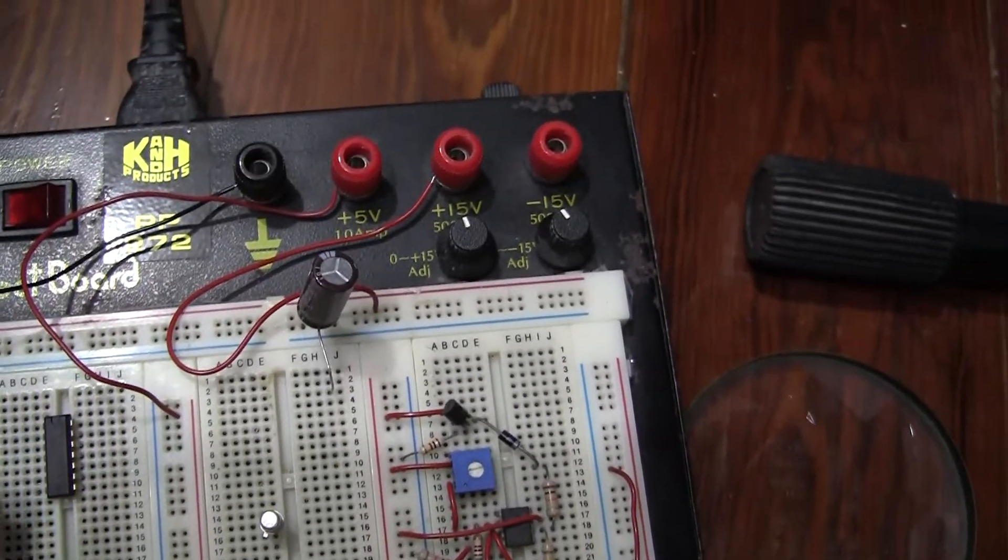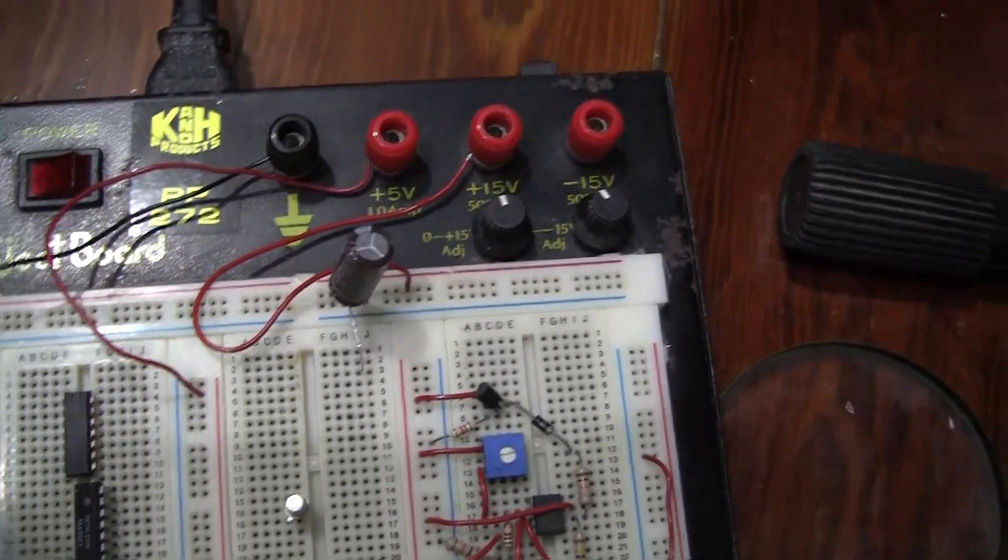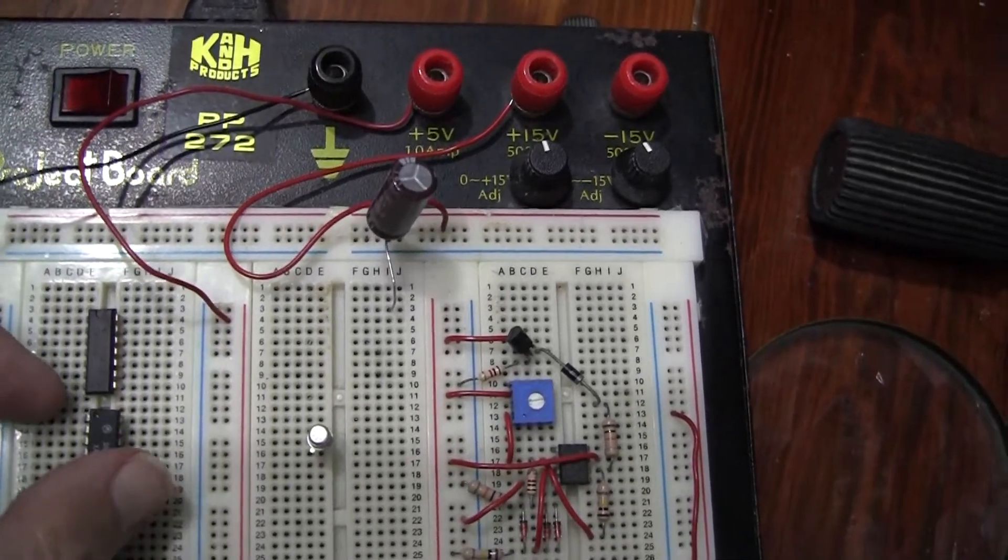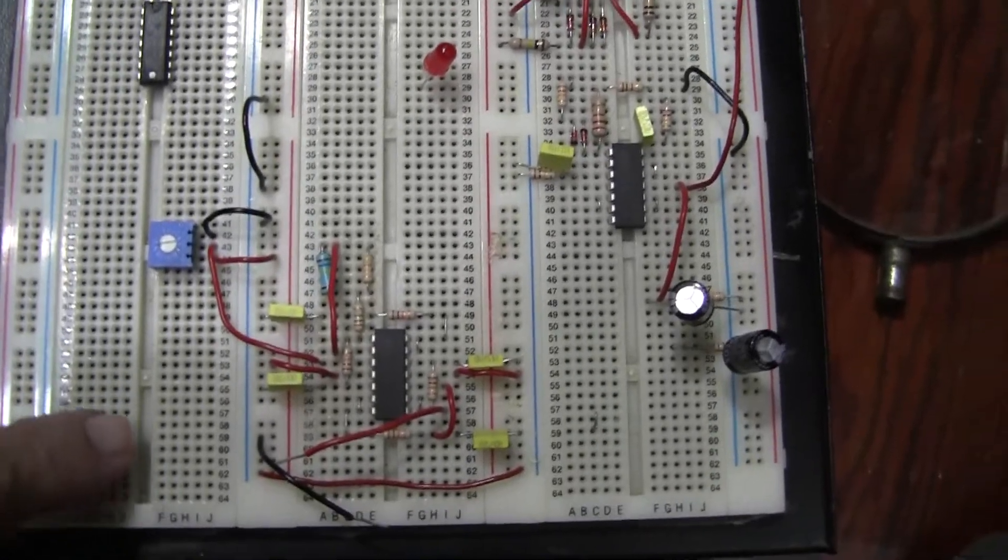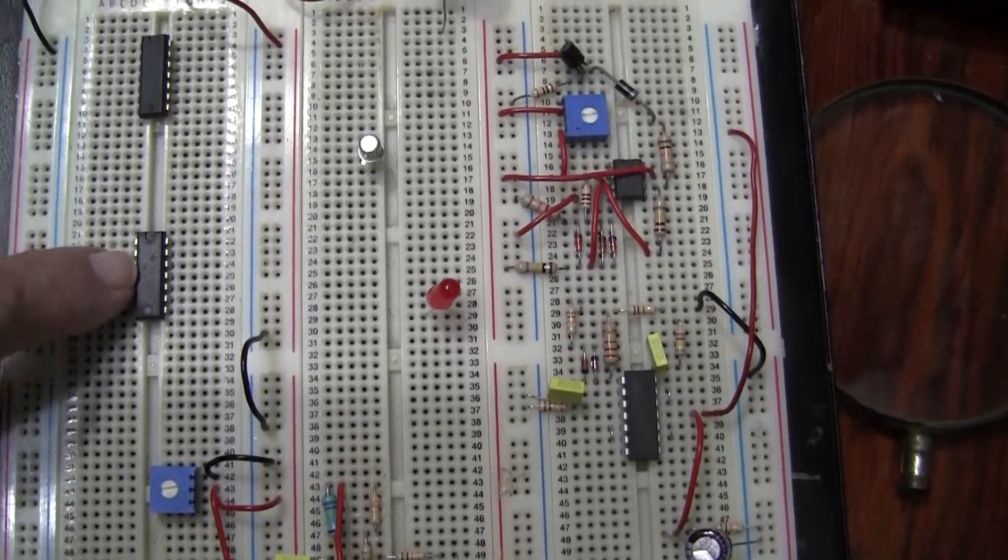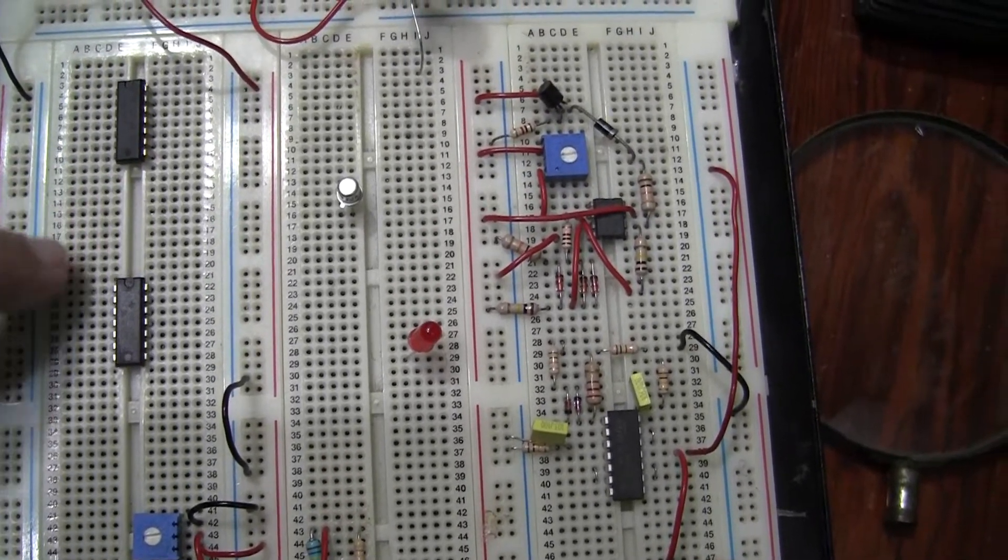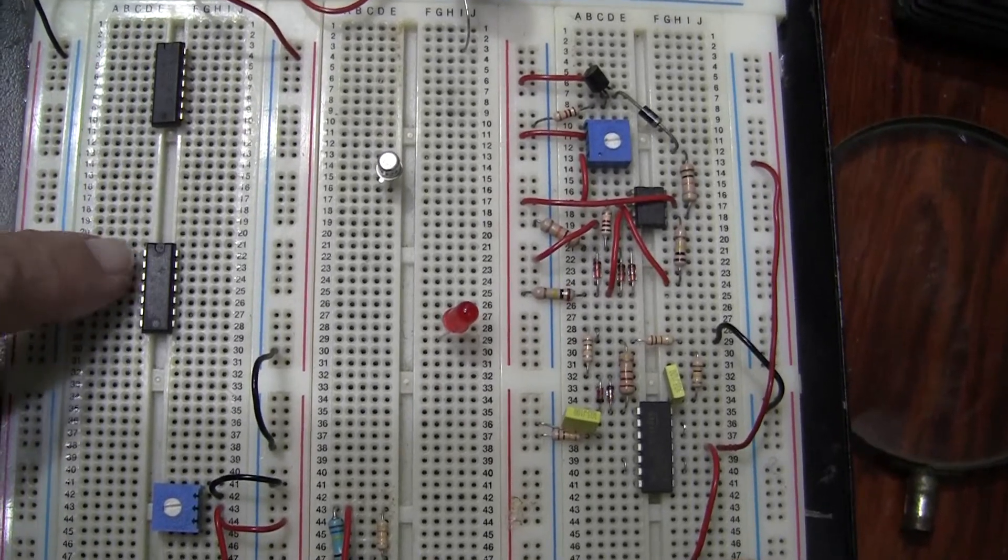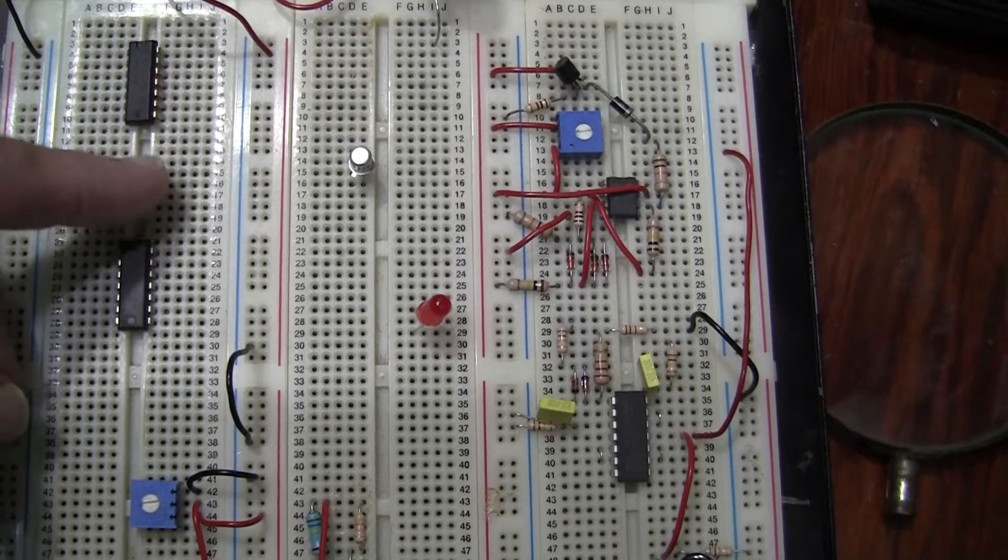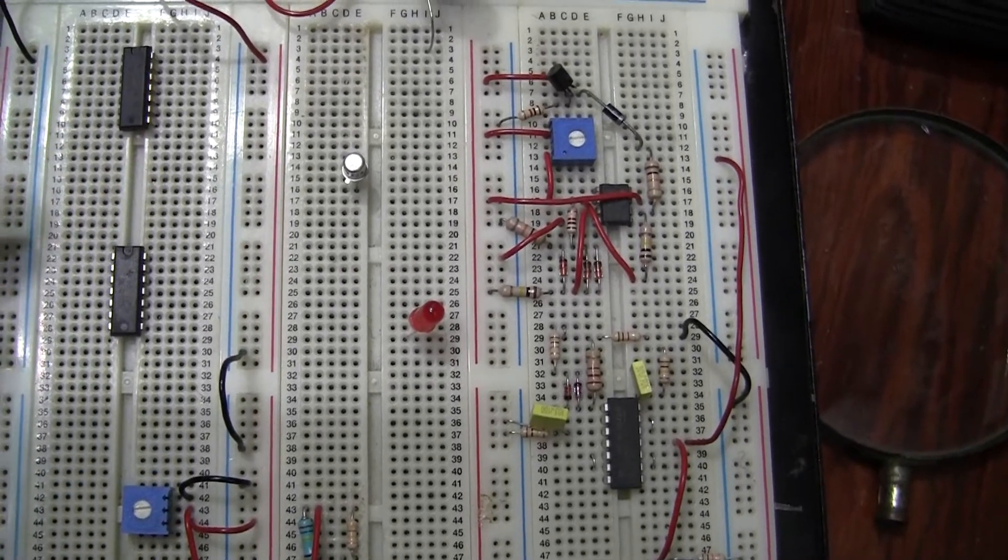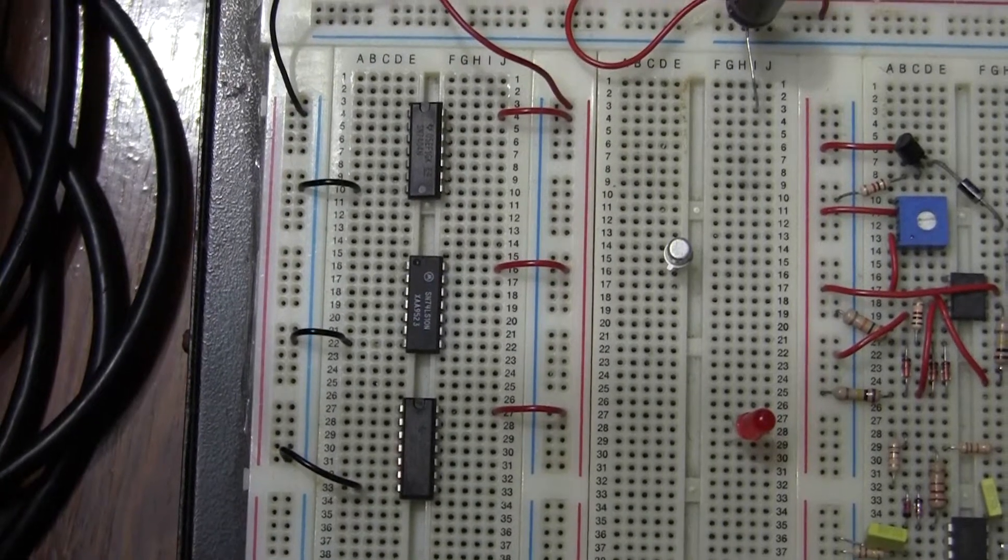So basically what I'm going to do now is I'm going to insert this IC into the board. Now you will notice that there's a sort of gutter running up here and you put the ICs across the gutter and then you have four possible connection holes for each pin. So we're going to put the IC in here now.